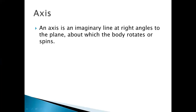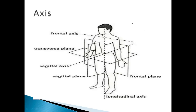What is axis? It is an imaginary line at right angle to the plane. If you know planes, you know how they divided the body. So if you have an imaginary line which is at a right angle — right angle means 90 degrees — we call it an axis. An axis is an imaginary line at right angles to the plane, and it is the one which the body rotates or spins around.